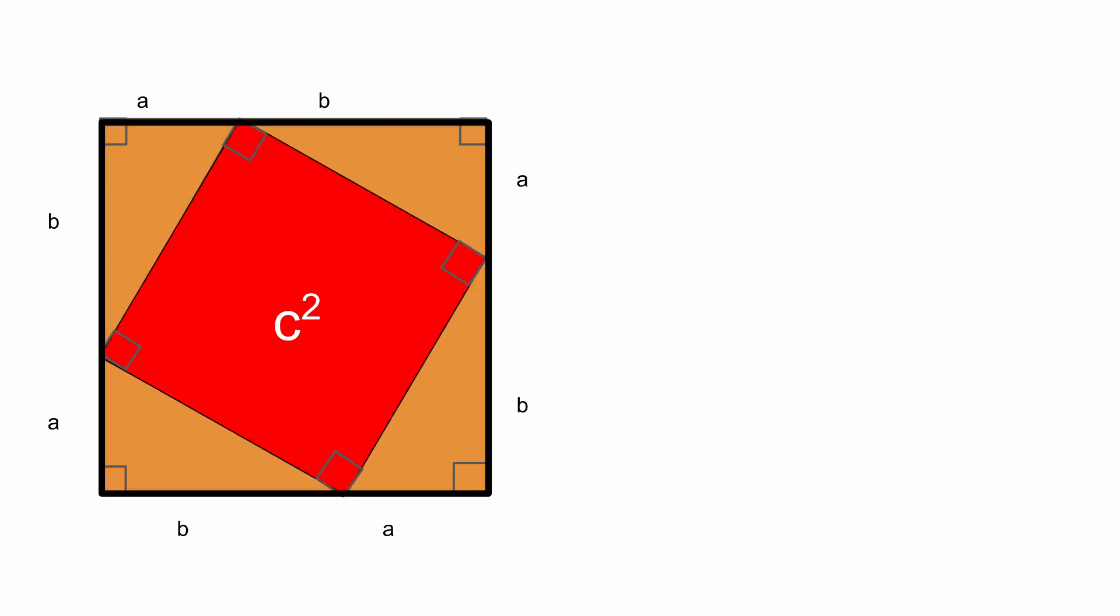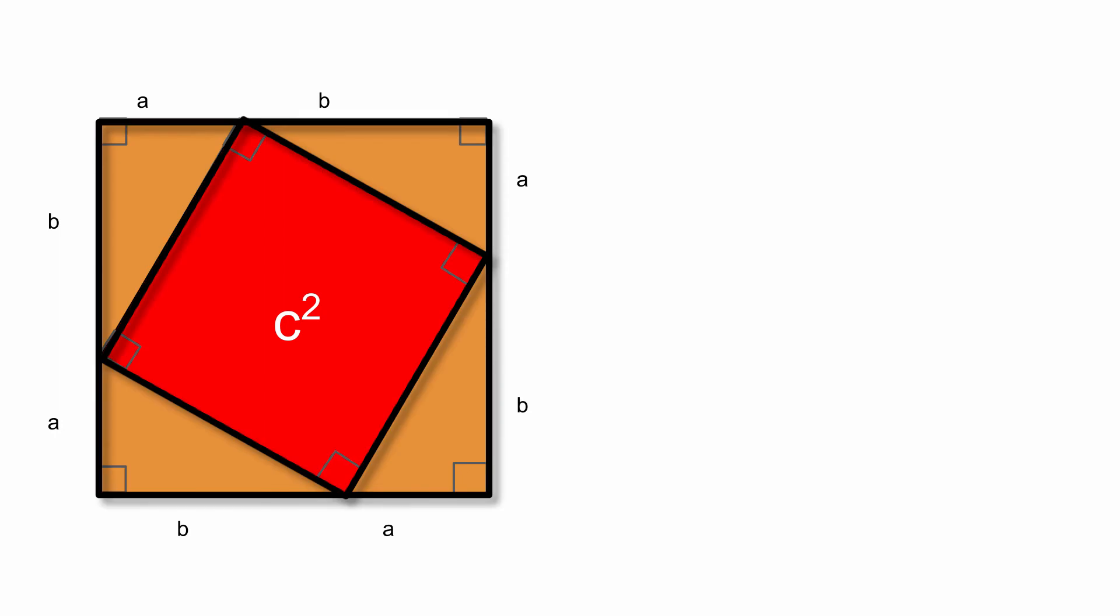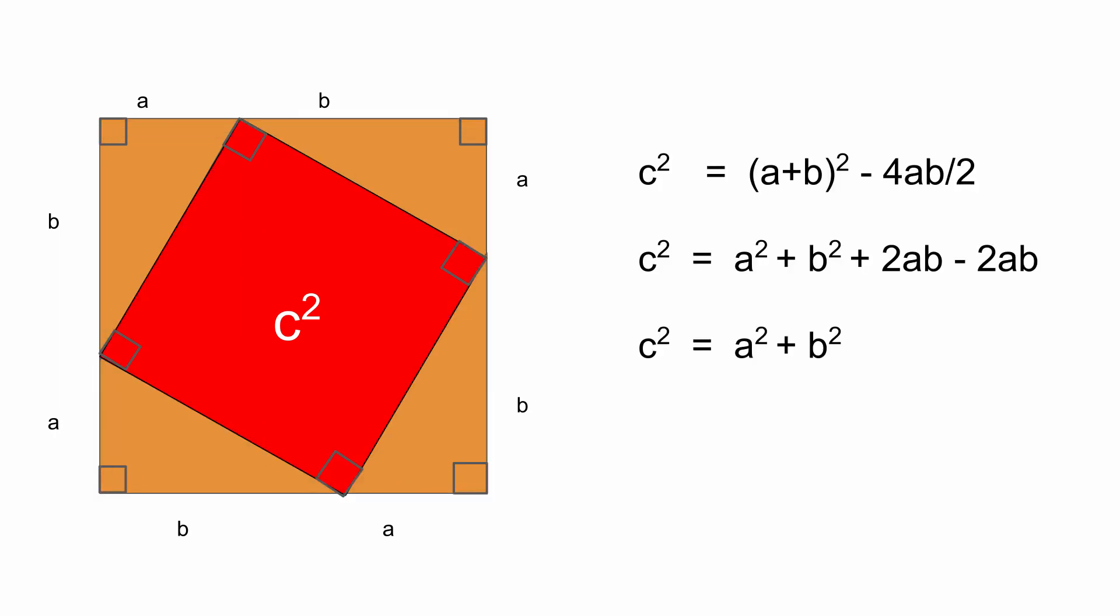So that means c squared equals a plus b whole squared minus 4 times a, b over 2, which is basically saying c squared equals a plus b whole squared is the area of a square that has side length a plus b, minus 4 times the area of a triangle. So we're good with that. Let's move on.